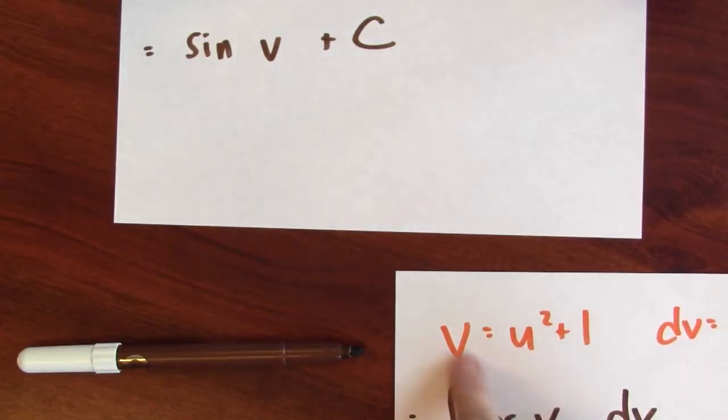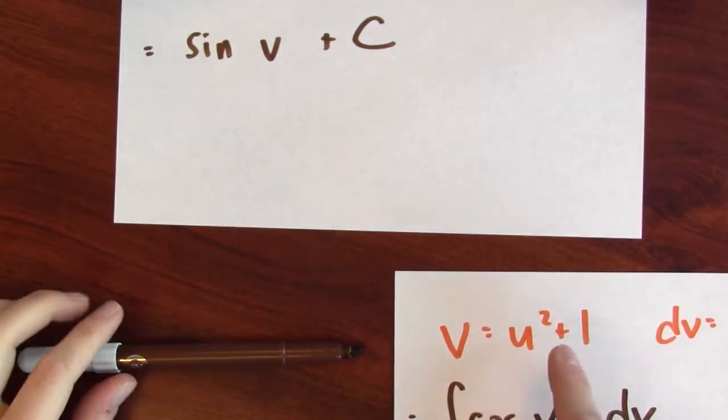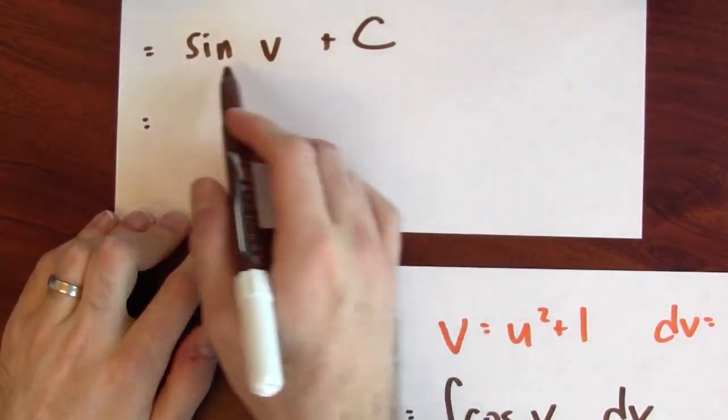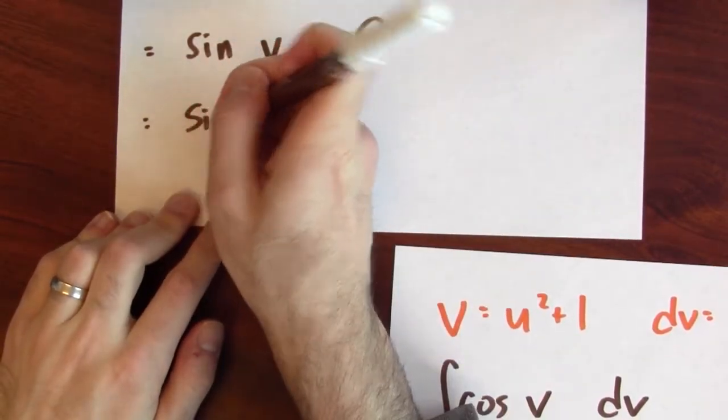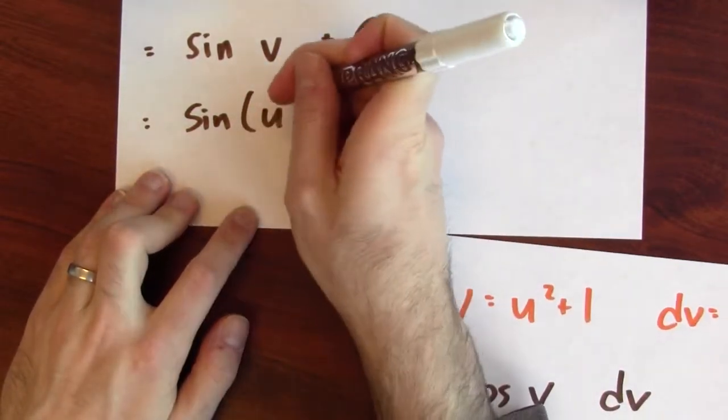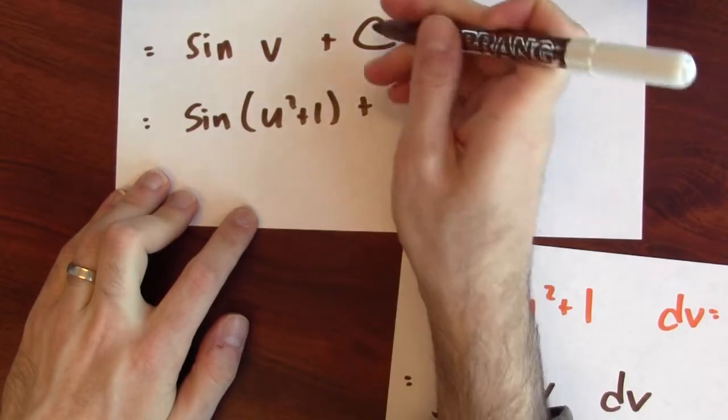Remember from before that v is u squared plus 1, so I can substitute that in here. Instead of writing down sine of v plus c, I'll write down sine of u squared plus 1, and then I'll include that plus c.